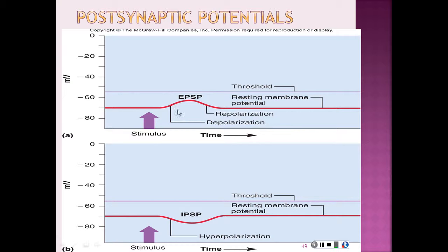Here you have an example of the EPSP and the IPSP. In figure 12.24 in your textbook, you see the first one where we have the voltage change that raises the membrane potential closer to the threshold — that's the EPSP, the excitatory postsynaptic potential. The IPSP is the inhibitory one, where a voltage hyperpolarizes the membrane making it more negative than the resting potential, so it's going in the opposite direction.